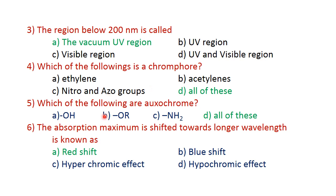Question five: which of the following are auxochrome groups? OH, OR, NH2, and all of these — all of these is the correct answer.